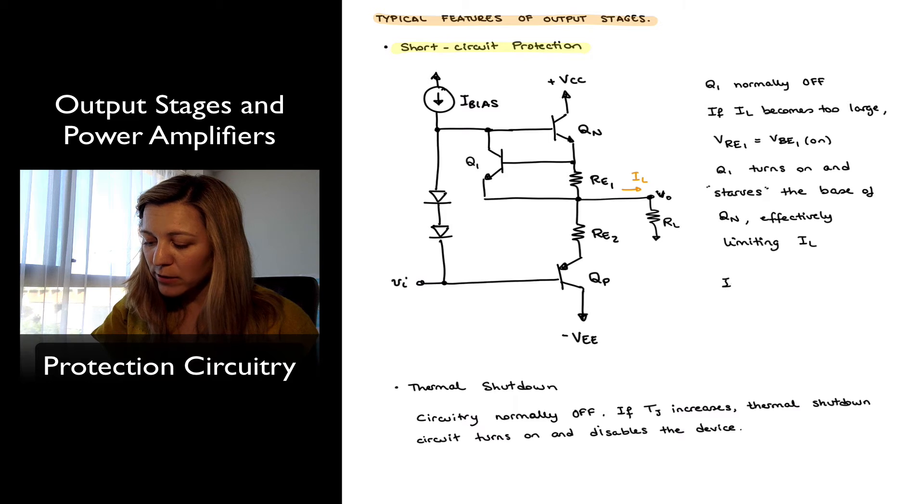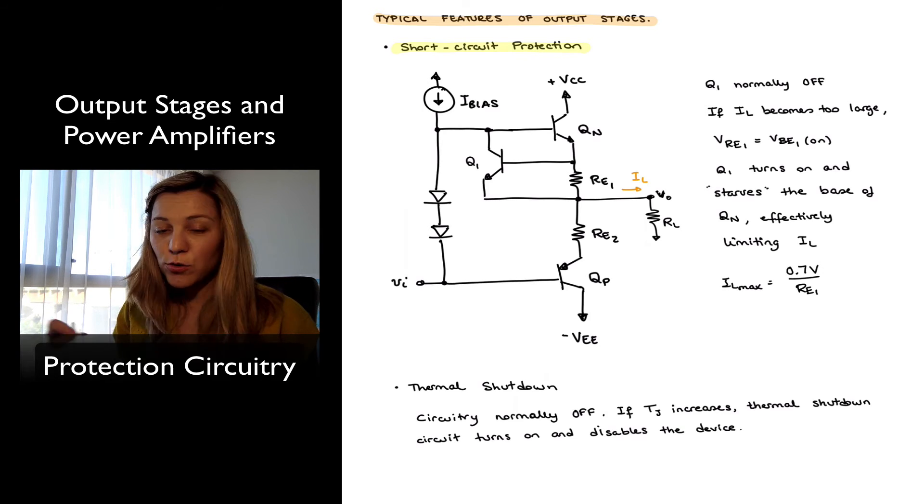The maximum value of IL that we can get in this configuration is going to be equal to 0.7 volts divided by Re1, because as soon as the voltage across Re1, which is 0.7 volts, then Q1 is on.